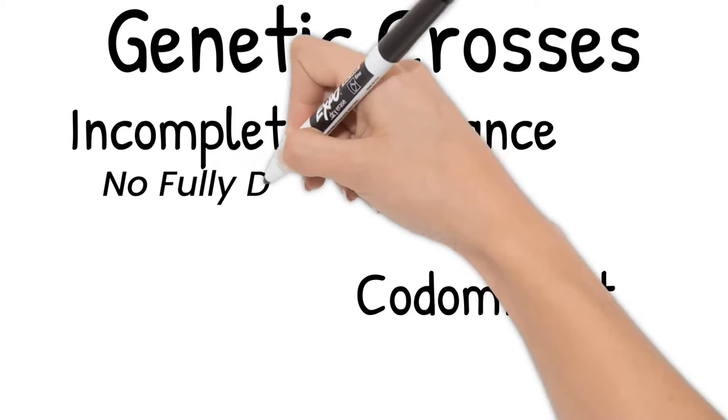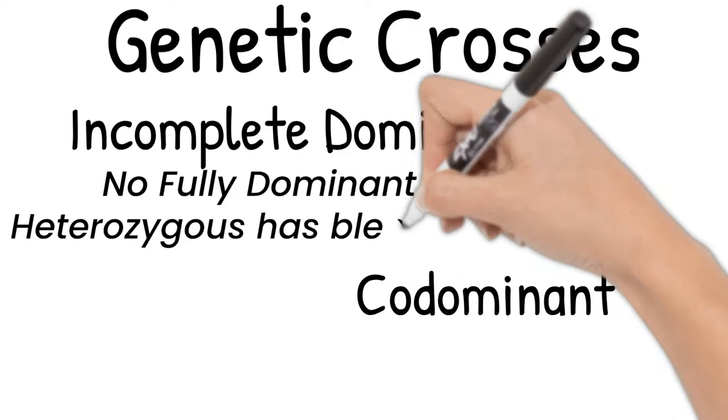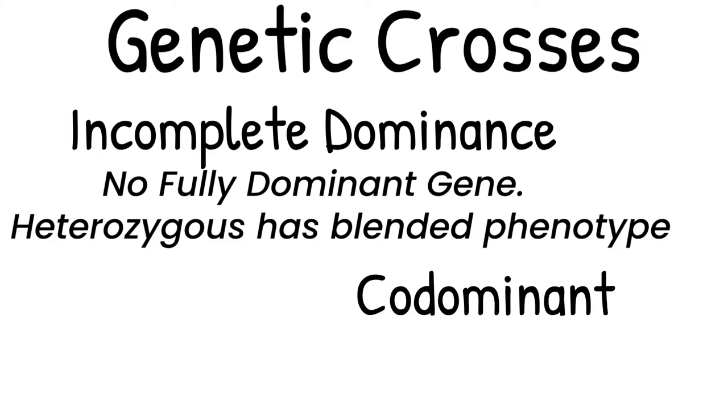Incomplete dominance is when there isn't a fully dominant gene and a heterozygous genotype leads to a phenotype that is between dominant and recessive. This is also called blending as the dominant and recessive traits blend together.